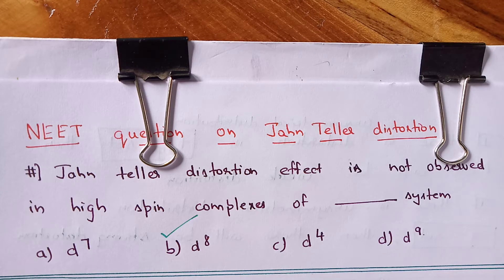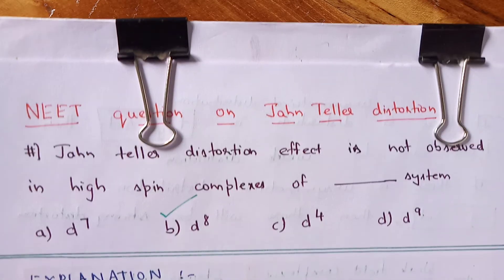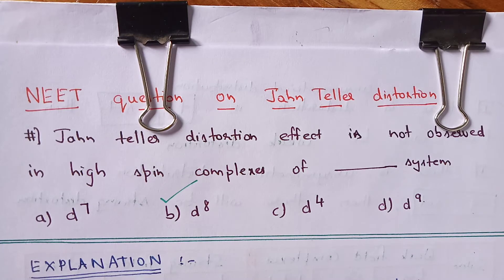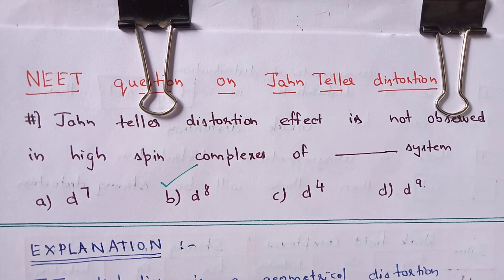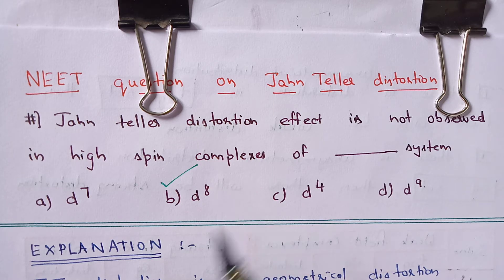Here is a neat question on Jahn-Teller distortion. Jahn-Teller distortion is not observed in high spin complexes of which system? The answer is the D8 system. Let us understand what Jahn-Teller distortion is and also find out why the D8 system is not showing Jahn-Teller distortion.